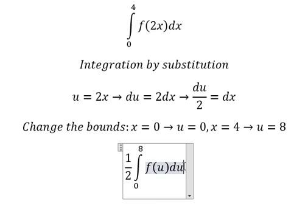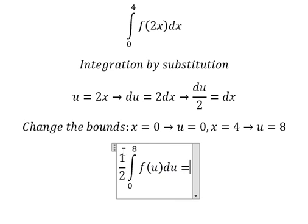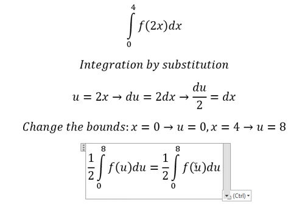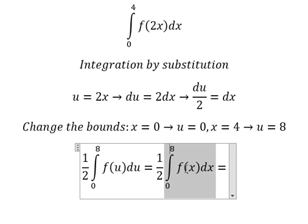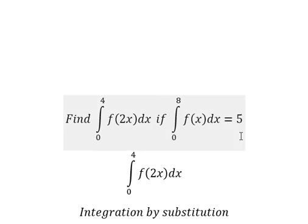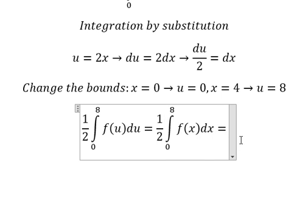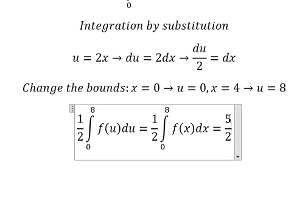Next, we need to know that when we change u go back to x, everything will keep the same. And we know that this integration is about number five, so we have five over two.